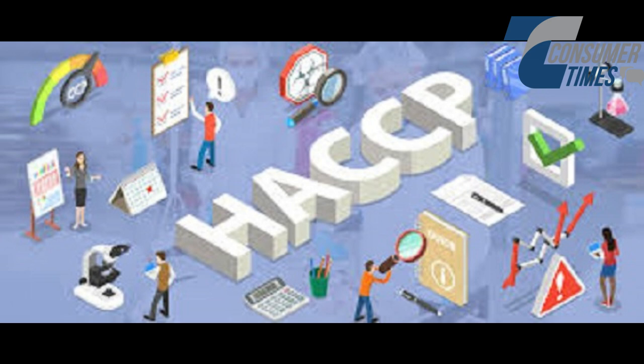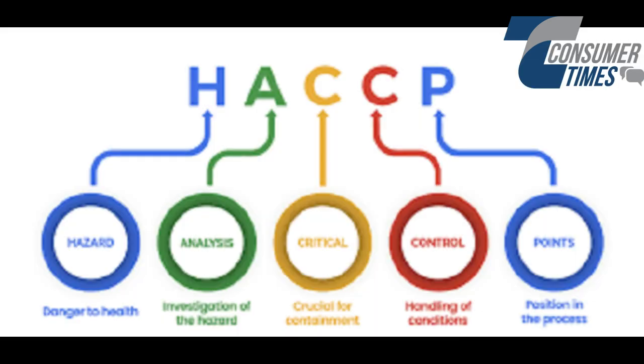A hazard is any biological, chemical, or physical agent that could potentially cause harm to consumers if not controlled. In HACCP, a thorough hazard analysis identifies these risks at every stage of food production. Biological hazards include bacteria, viruses, molds, parasites, and toxins that can cause food-borne illnesses.